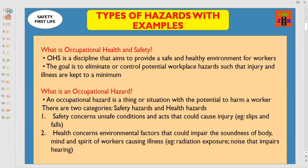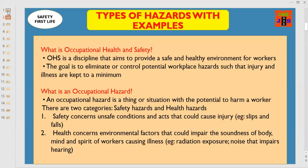To understand what is an occupational hazard, you have to understand first what is occupational health and safety. Occupational health and safety is a discipline that aims to provide a safe and healthy environment for workers. The goal is to eliminate or control potential workplace hazards so that injury and illnesses are kept to a minimum. Basically, there are two domains: health and safety.